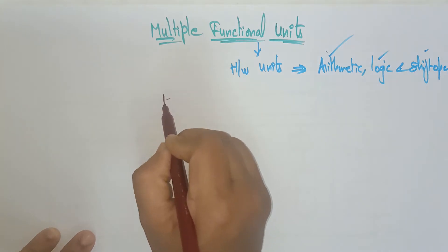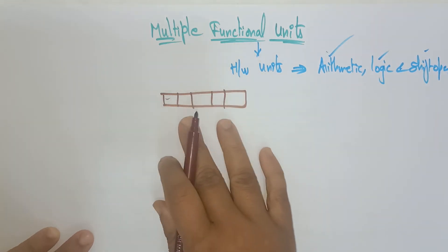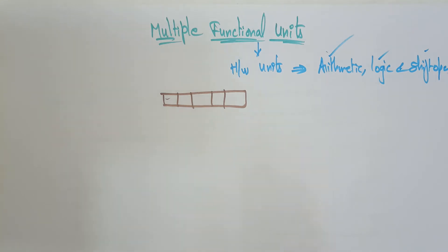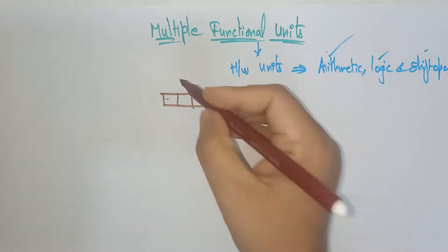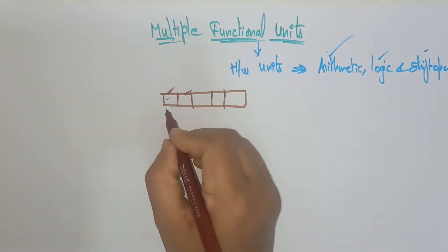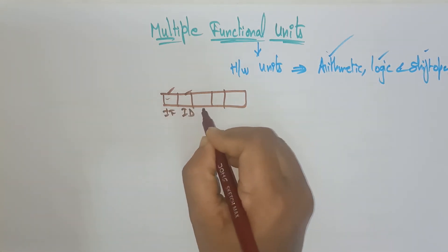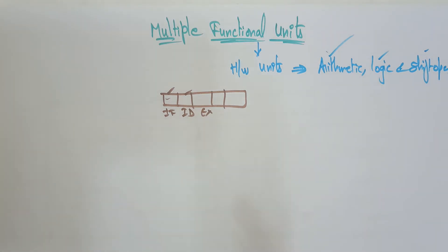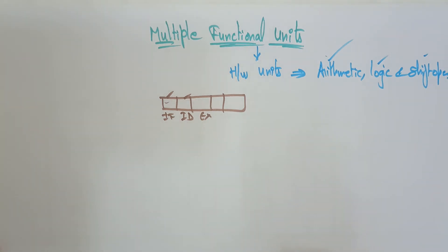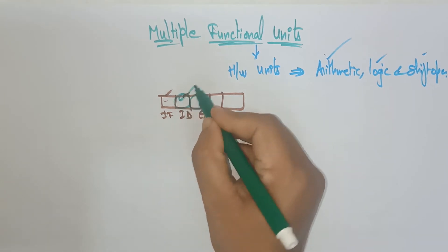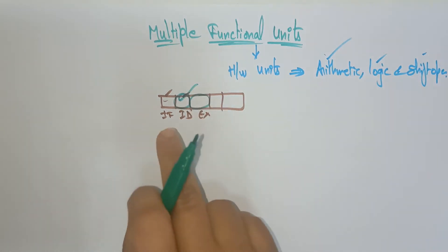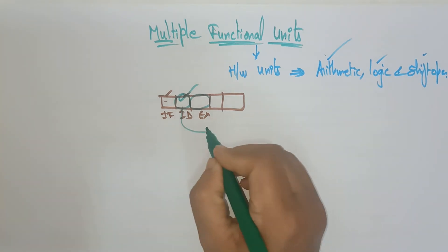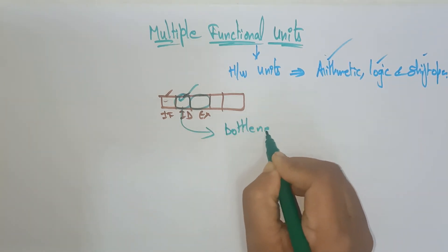In instruction pipelines, let's take whatever the instruction pipeline. Each instruction pipeline sometimes has certain pipeline stages that become bottlenecks. There are different stages: instruction fetch, instruction decode, execute, and write — each phase is performing some operation in the instruction pipeline. Sometimes a certain pipeline stage becomes a bottleneck, such as the execution part or the decode part.